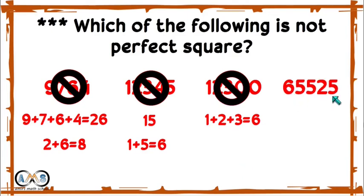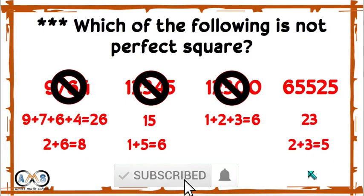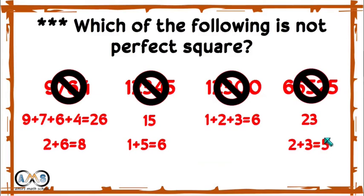Take 66525 — the number ends with 5, so it may be a perfect square. The digital sum gives 2+3=5. The digital root is 5, not 1, 4, 7, or 9, so this is also not a perfect square number.